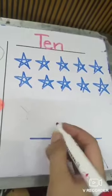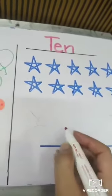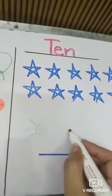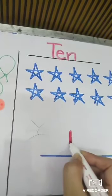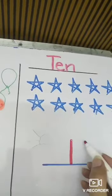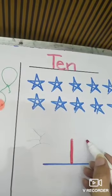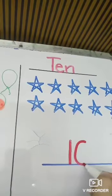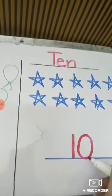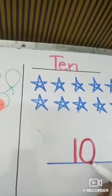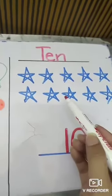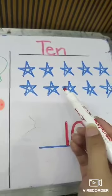Now I am telling you how to write the number 10. Please listen carefully. First of all, make a standing line like this — standing line straight. Next, make a 0 like a circle. 1, 0 — 10. This is number 10. How many stars on the board? There are 10 stars on the board.